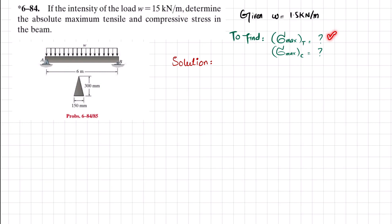We have to find the maximum tensile stress and maximum compressive stress. The maximum stress is given by the formula: maximum moment times c, divided by I. For that, we have to find the maximum moment by using the shear force and bending moment diagram.